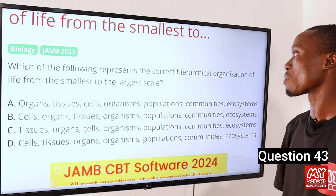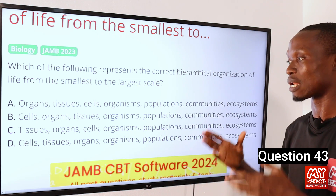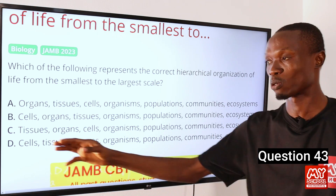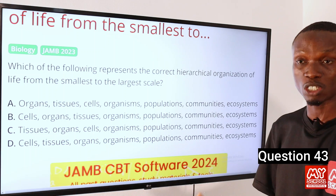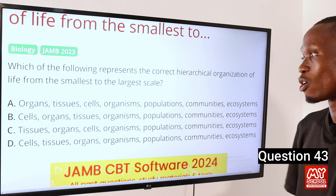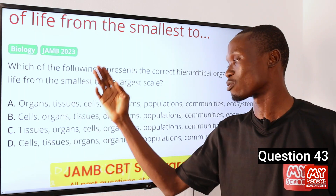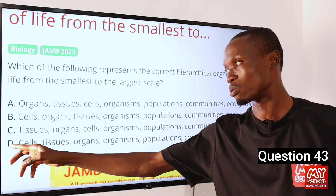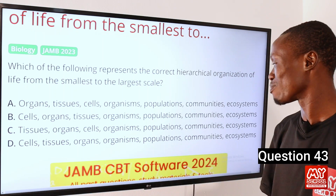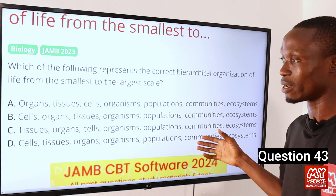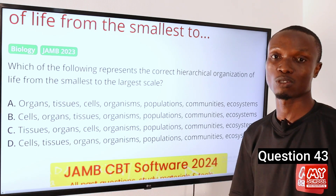The correct hierarchical organization of life from the smallest to the largest scale is option D, which begins with cells. We know that the cell is the basic unit of life, so all life begins with the cell. The correct answer is option D: cells, tissues, organs, organisms, populations, community, and ecosystem.